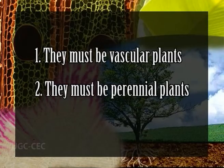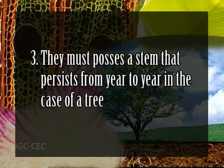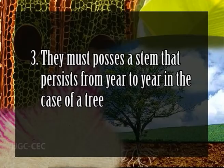Number two: they must be perennial plants, that is they must live for a number of years. Annual plants complete their life cycle within one season and biennials live for two years. Number three: they must possess a stem that persists from year to year in the case of a tree, which is also called a bole.